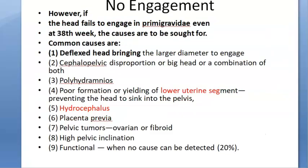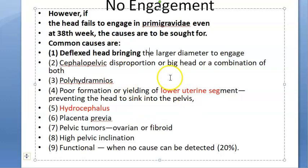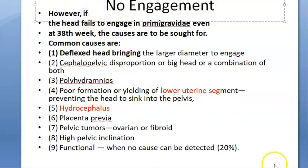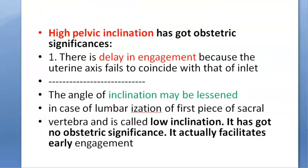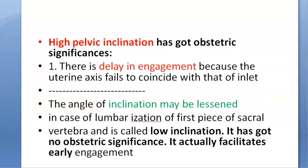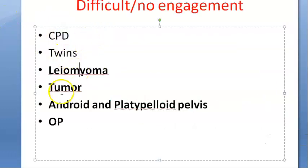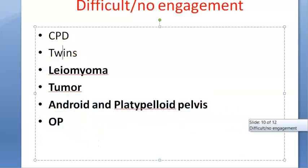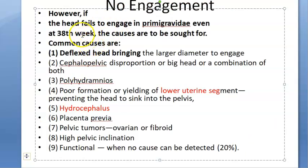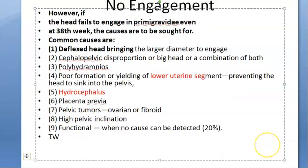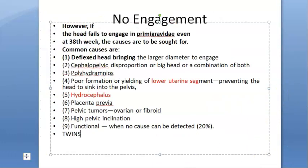Summarizing the causes of non-engagement: high pelvic inclination, twins, leiomyoma, android and platypoid pelvis. While twins are not always listed in the textbook, sometimes one twin prevents the other from engaging. Functional causes — where no specific cause is found — also exist.